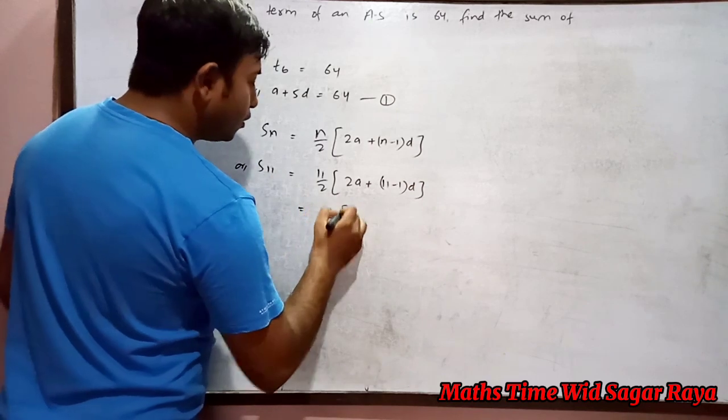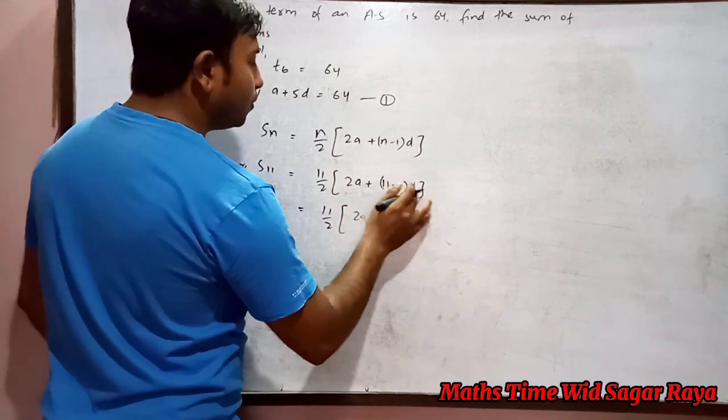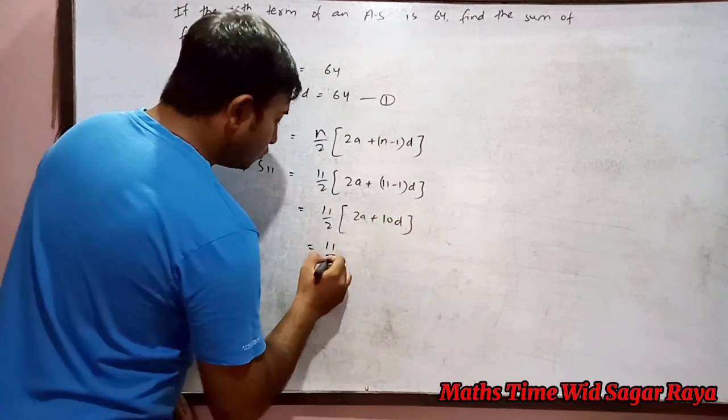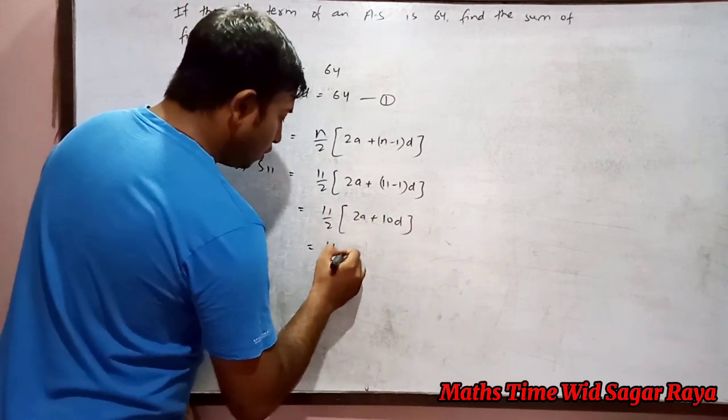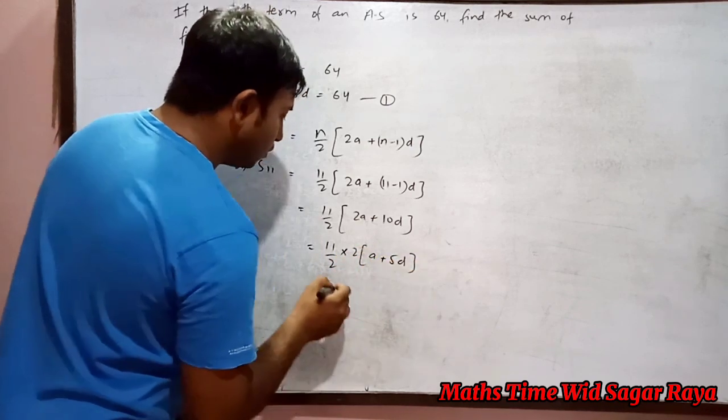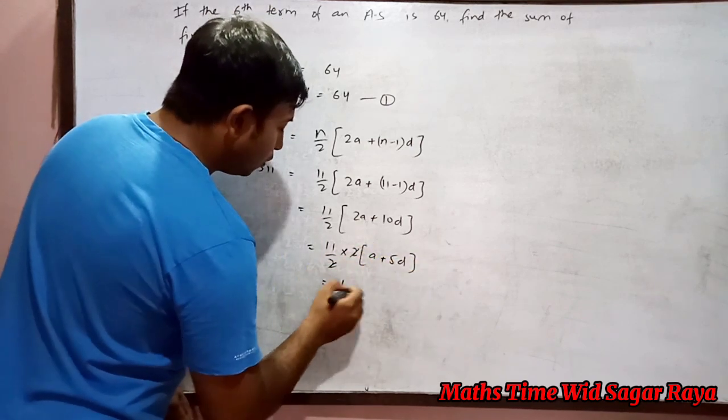So now 11 by 2 times 2a plus 10d. If you take 2 common here it will be a plus 5d, so the 2s cancel. Now 11 into a plus 5d.